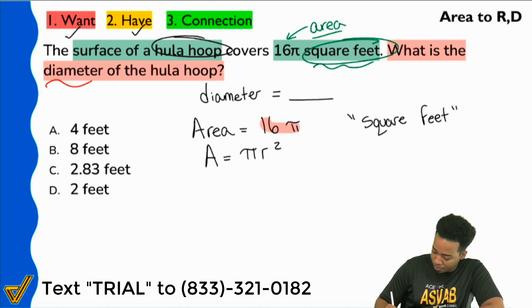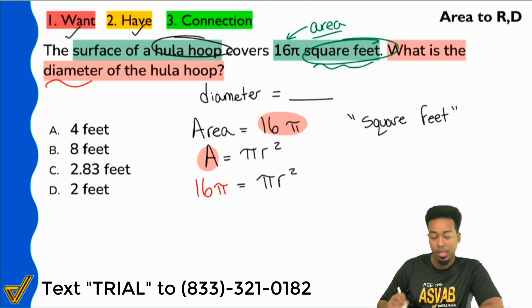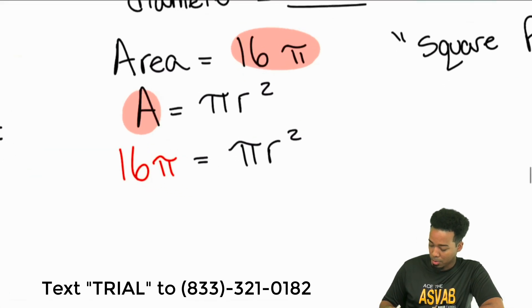So what I'm going to do here is I'm going to solve this equation. I'm going to plug in 16π for the area, just like this, plug in 16π. I'm going to solve this for r or the radius. And then I'm going to find the diameter after the fact. So here we go. First thing I'll do, let me zoom in here.